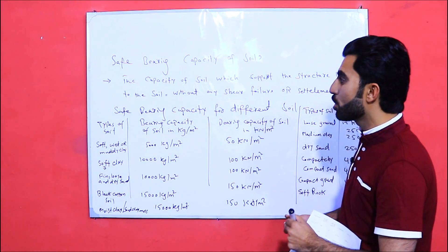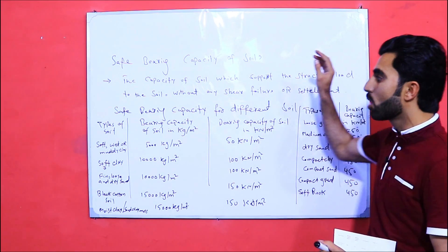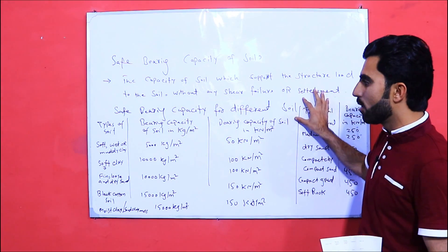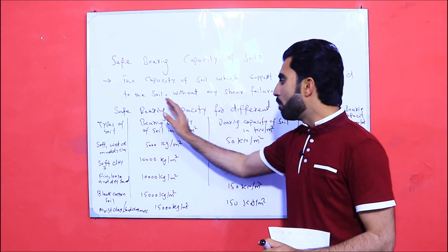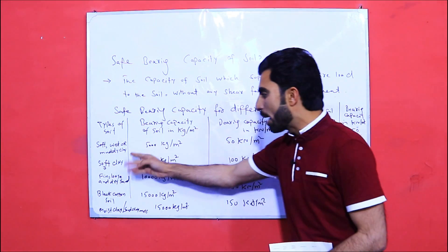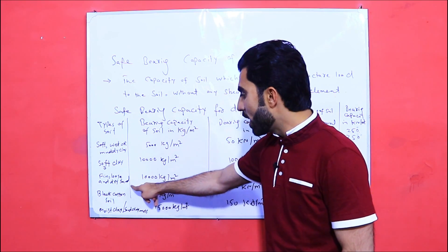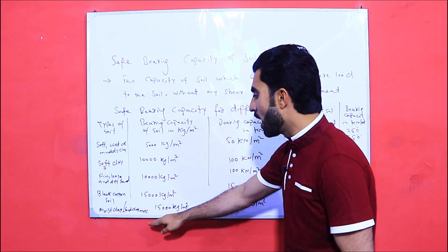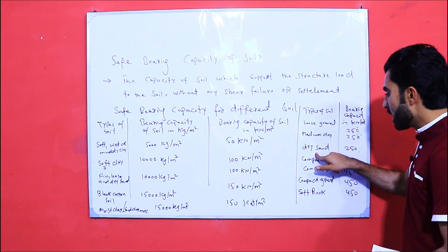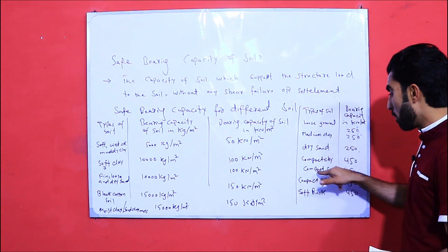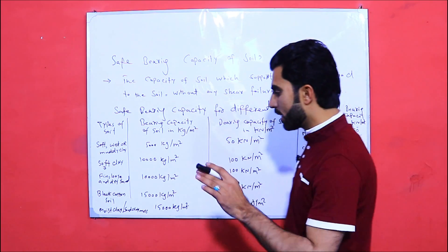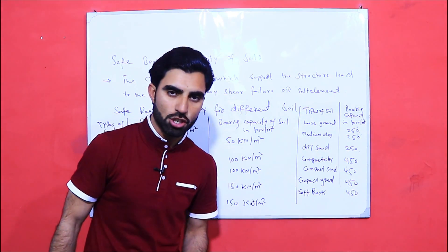So this is the topic for today — Safe Bearing Capacity of soil, which is the capacity of soil to support structural load without shear failure or settlement. We have covered the bearing capacity values in kg per meter square and kilonewton per meter square for: soft wet muddy clay, soft clay, fine loose dry sand, black cotton soil, moist clay or sand clay, loose gravel, medium clay, dry sand, compact clay, compact sand, compact gravel, and soft rock.